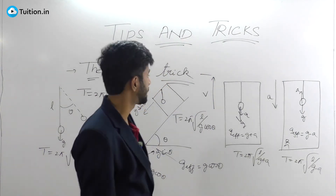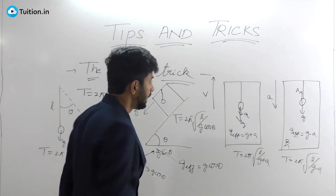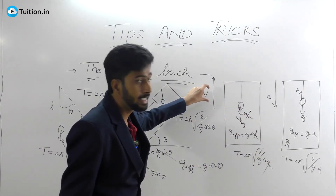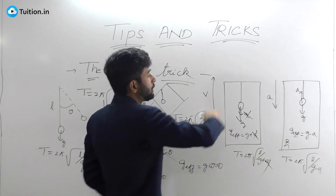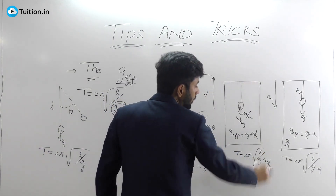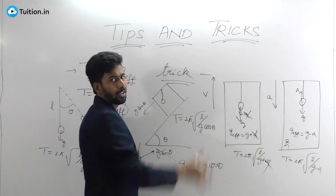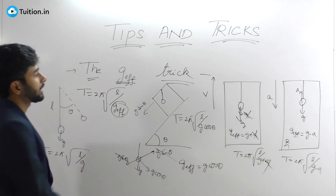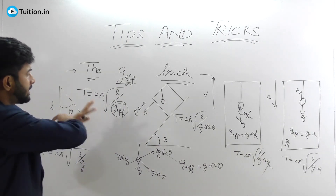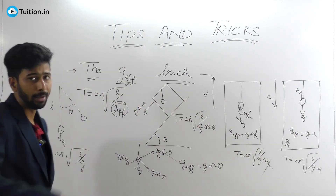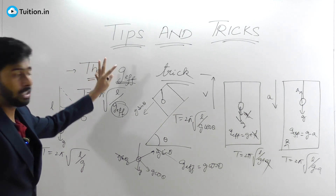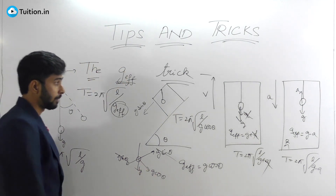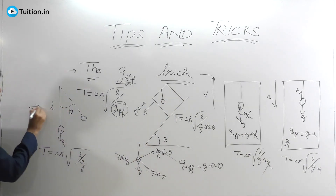If the lift moves with a constant velocity — say velocity v — then none of these pseudo force corrections apply. Velocity is not the issue; only if your frame is accelerating do you need to account for it. If it's moving with constant velocity and there's no acceleration, the answer remains 2π√(l/g). These are just three or four scenarios, but once you understand how g-effective works, you can handle many such problems — and these types are more likely to appear in examinations.